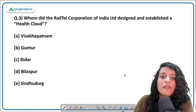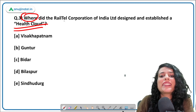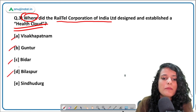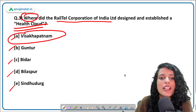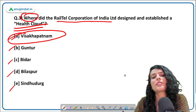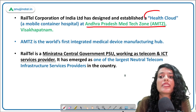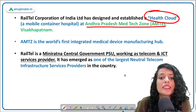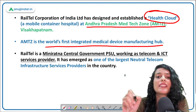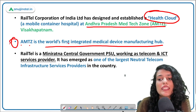The next question asks: where did RailTel Corporation of India Limited design and establish a health cloud? The correct answer is Visakhapatnam. RailTel partnered with the Andhra Pradesh MedTech Zone (AMTZ), which is the world's first integrated medical device manufacturing hub. Andhra Pradesh has the only mega industrial park in the country, situated in Visakhapatnam. Together, AMTZ and RailTel established a health cloud.